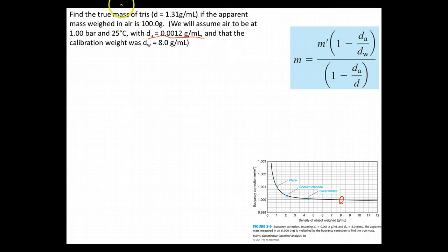Now let's take a look at this one. It says find the true mass of tris. That's a common chemical compound. It gives us our density for our sample. And it specifies that the apparent weight in air is 100 grams. In other words, we stuck this on the scale and we saw it pop off the number 100 grams. We're going to assume air to be 1 bar, 25 degrees with that density. And we're going to assume that our calibration weight was 8.0 grams per milliliter. So I'm going to go ahead and have you pause the video, try to use this equation in order to solve this value, and we'll figure out what the actual mass is.